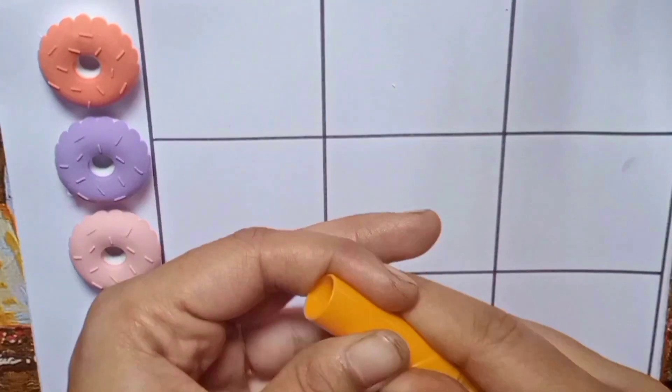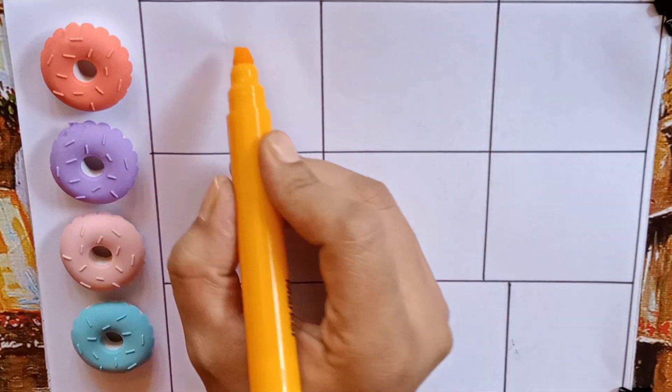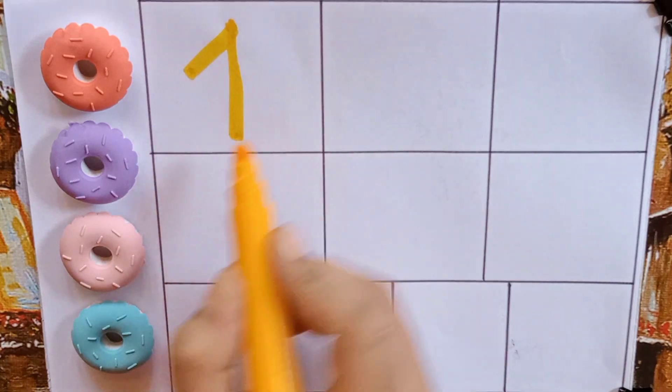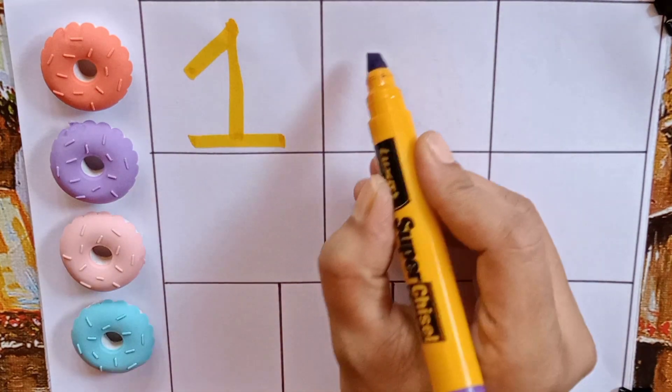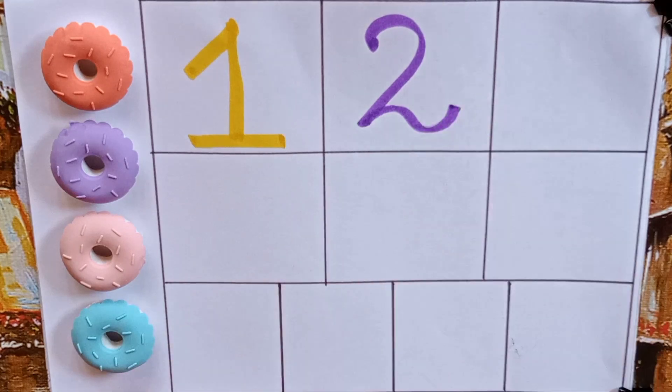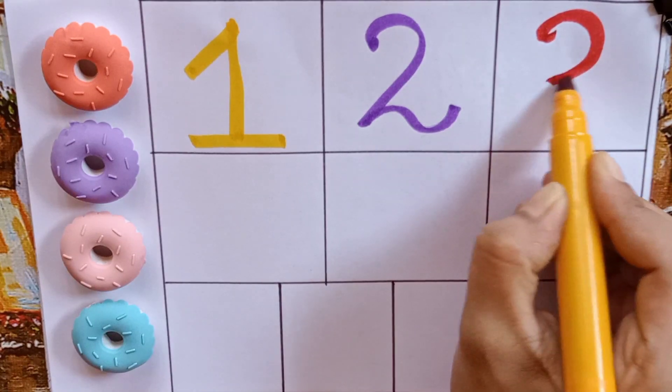Yellow color. One, O-N-E, one. Purple, two, T-W-O, two. Red, three, T-H-R-E-E, three. Green, four, F-O-U-R, four. Pink, five, F-I-V-E, five. Blue.